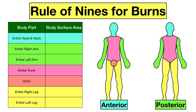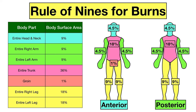Now it's your turn to fill in the table and diagram. Hit pause in the video and try to fill in the numbers for an adult on your own using the rule of nines. Once you think you have the answers, hit play again to reveal the correct numbers. Here you can see the correct responses — hopefully you were able to get them all correct.